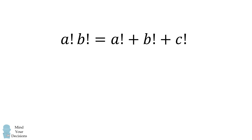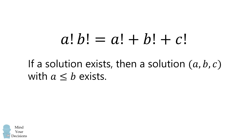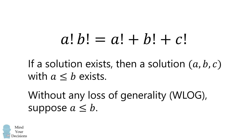We will get started by noticing a symmetry in this equation. What would happen if we transpose the variables a and b? Because multiplication and addition are commutative, we have an equivalent equation. Therefore, if (a, b, c) is a solution, then (b, a, c) is also a solution. What this means is that if a solution exists, then a solution with a less than or equal to b also exists. Without any loss of generality, we can suppose a is less than or equal to b.